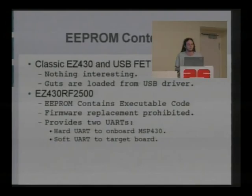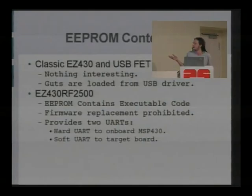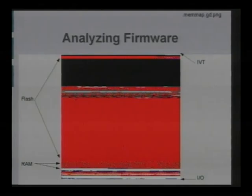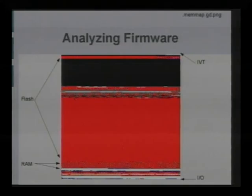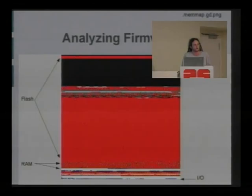In the classic version, the EZ430F2012, there's nothing interesting inside the EEPROM — it says Texas Instruments in Unicode and has the basic configuration requirements for the USB-to-serial mode. In the EZ430RF2500 — the Zigbee version — it actually contains executable code, and it prohibits updates over the USB port. So not only can your Linux machine not get a serial port, it can't instruct the chip to use the firmware it has within the Linux kernel binary blob.